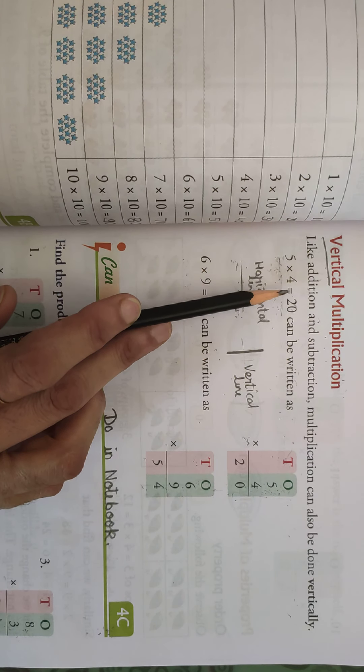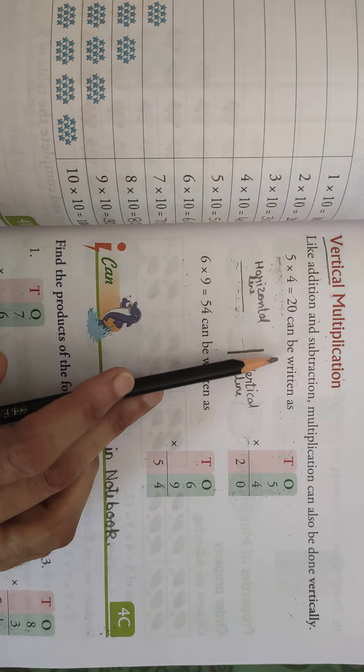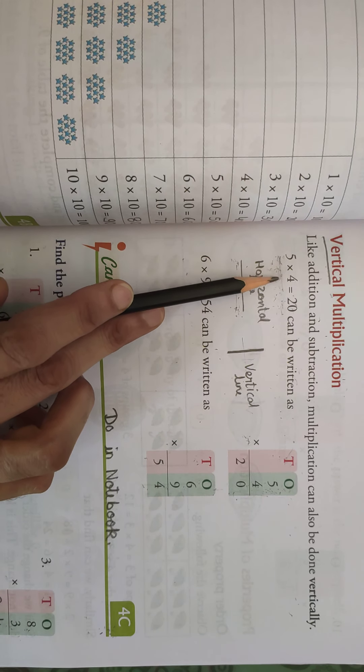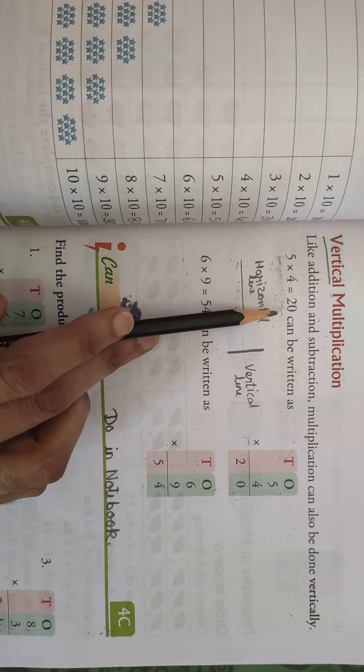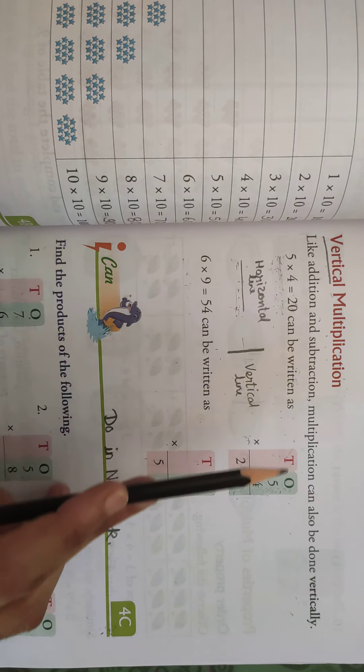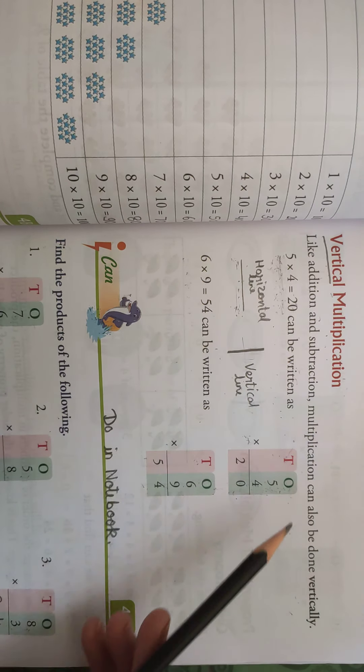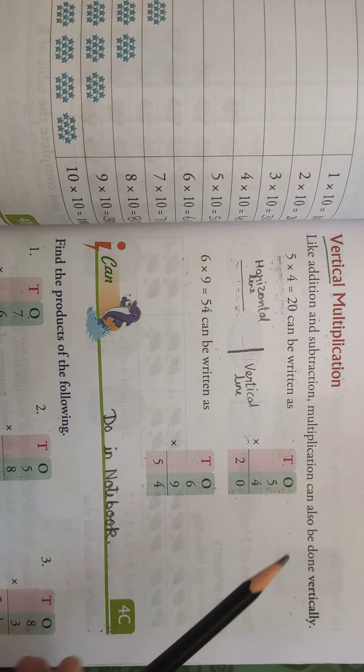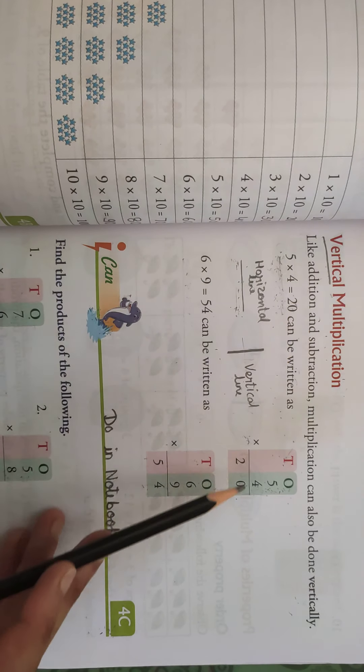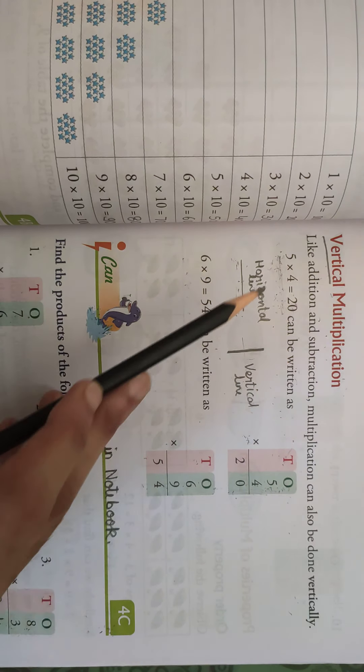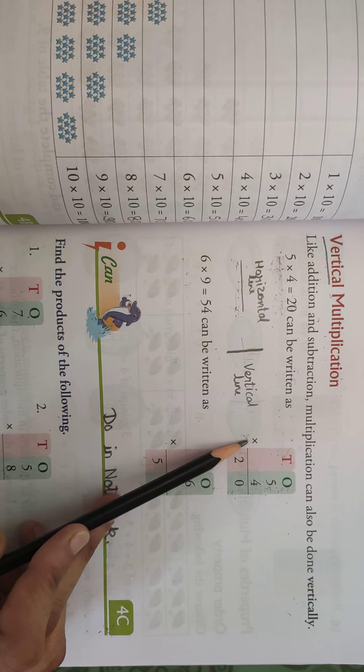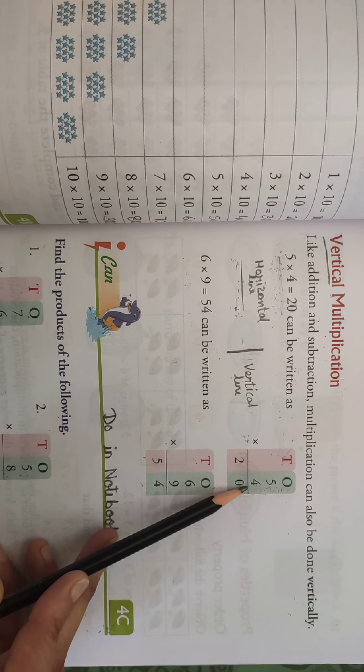Okay, so you can see, 5 multiplied by 4 is equal to 20, can be written as, ya ne ki, yeh dekhye, horizontally liikha hai, 5 multiplied by 4 is equal to 20, so can be written as, isse hum aise bhi likh sakte hain, vertically. Sab se pahle hum kya kareenge, tens and ones ki place likhenge, okay, then 5, sab se pahle kya number aya hain pe, 5 to hum sab se upar 5 hi likhenge, then multiplication ka sign hai, so what you will do, here you will do, multiplication sign and then 4.